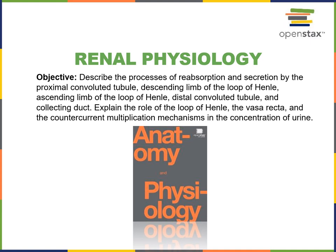In this video, I will describe the processes of reabsorption and secretion by the proximal convoluted tubule, descending limb of the loop of Henle, ascending limb of the loop of Henle, distal convoluted tubule, and collecting duct. Then I will explain the role of the loop of Henle, the vasa recta, and the countercurrent multiplication mechanism in the concentration of urine.